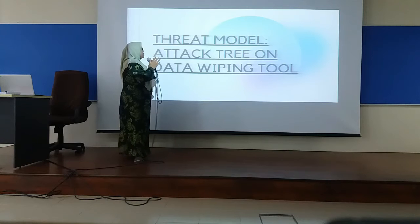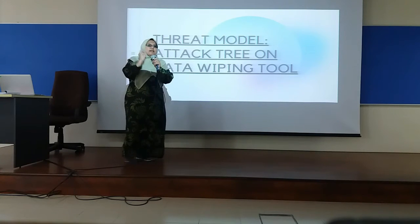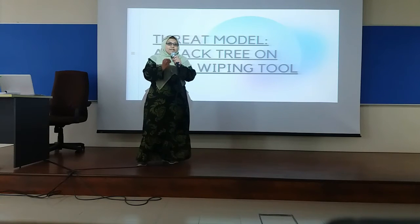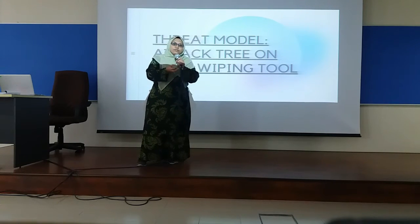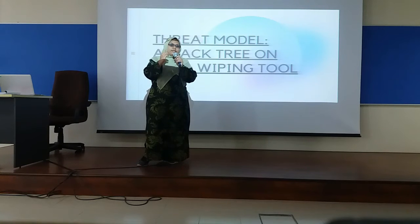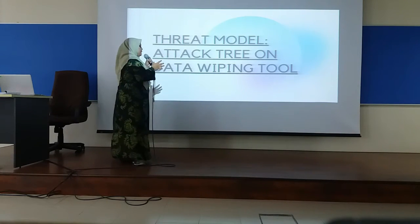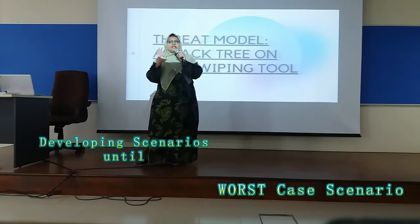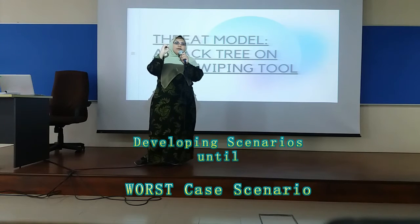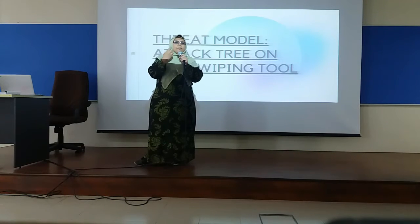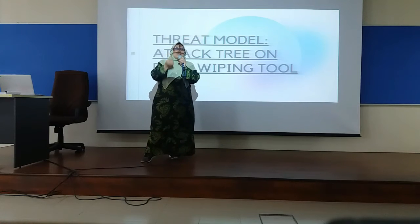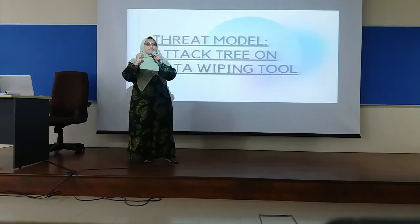For the Threat Model of the data wiping tool, we use an Attack Tree. An Attack Tree is basically developing scenarios on what will happen if the data, information, or files are recovered and the integrity and confidentiality of the data is attacked. In the Attack Tree, we choose one or two of the biggest scenarios, and from those, we create more scenarios until we reach the worst-case scenario. My friend Aris will now explain the Attack Tree model of the data wiping tool.